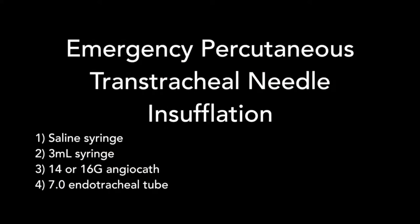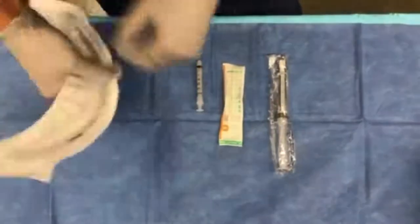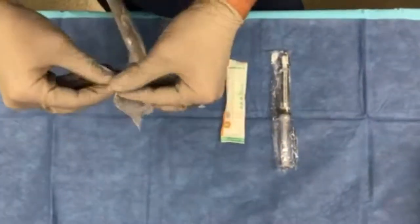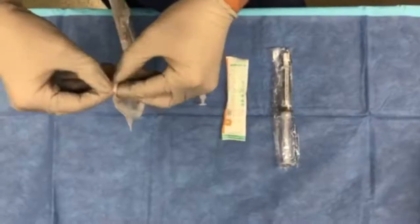In case of emergency, such as laryngospasm and the inability to ventilate a patient, a percutaneous transtracheal needle insufflation device can be created with the following materials. The video shows how to assemble these to have them ready on the back table in case of such emergency.